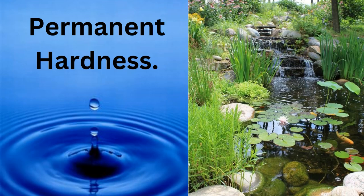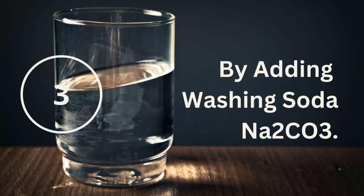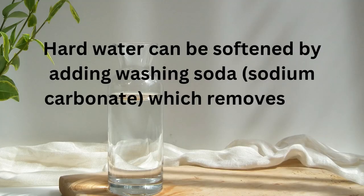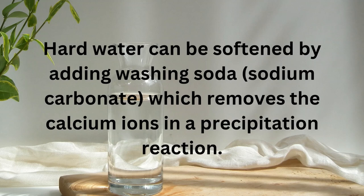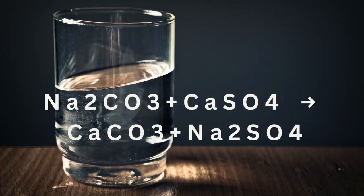Permanent hardness. Method 3: By adding washing soda, Na2CO3. Hard water can be softened by adding washing soda — sodium carbonate — which removes the calcium ions in a precipitation reaction. Sodium carbonate reacts with calcium sulfate to form calcium carbonate and sodium sulfate.